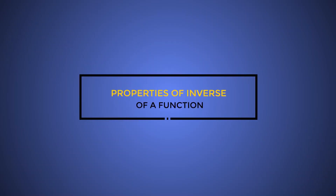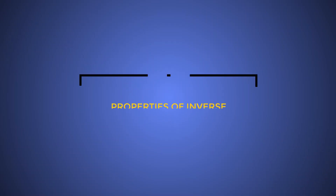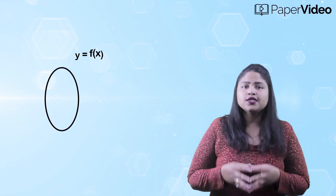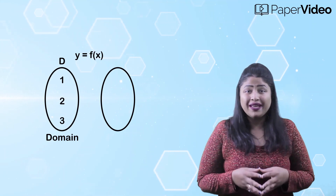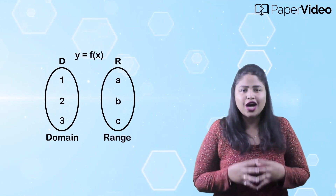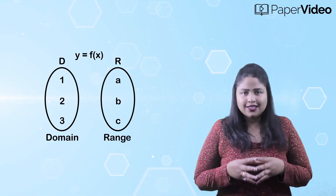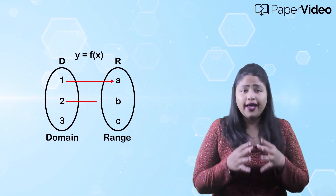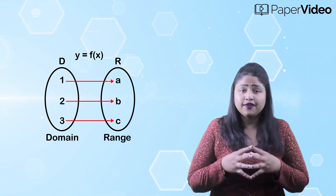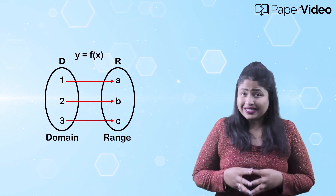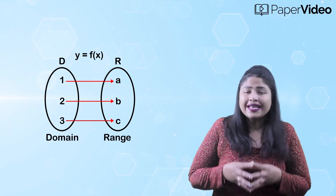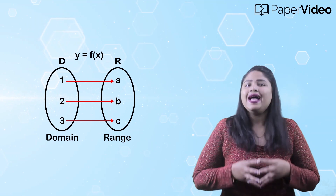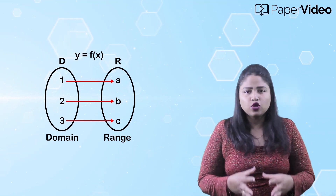Properties of Inverse of a Function. Suppose y equals f of x is a function defined on a domain D and has a range R. Then by the definition of a function, for every value of the independent variable x in the domain D, there exists a certain value of dependent variable y in the range R.